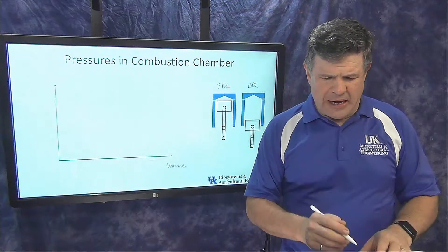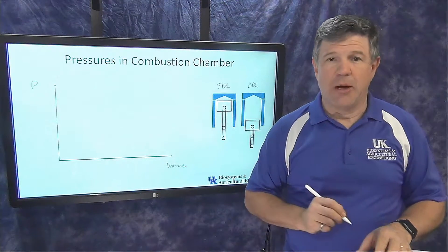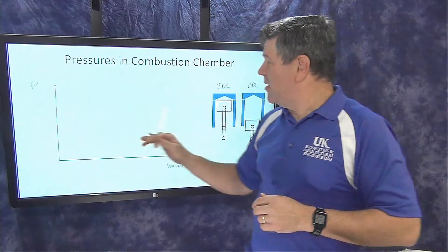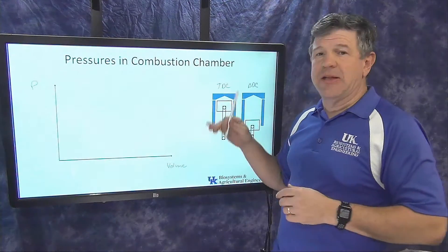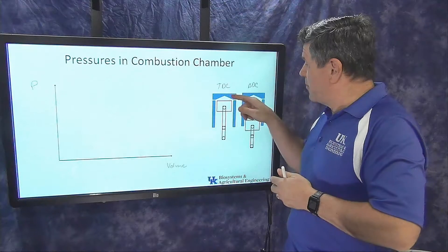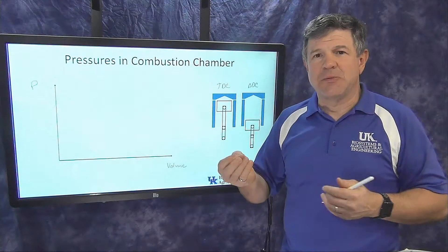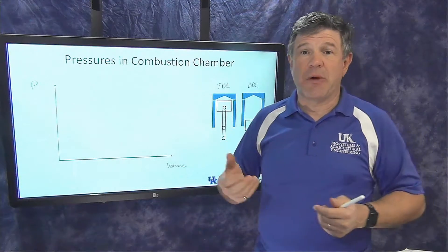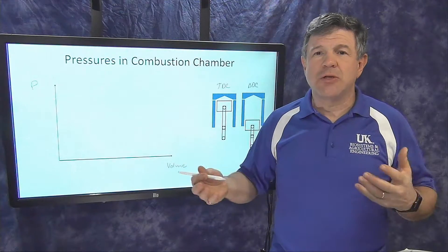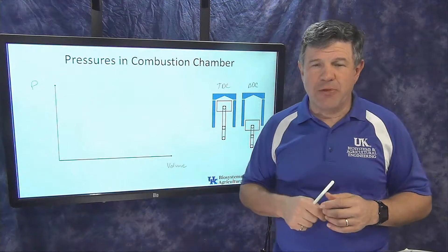On the y-axis, we're going to plot the pressure — capital P. This is the pressure inside the combustion chamber, as if somebody put a pressure sensor in there and measured how much pressure is present. Those are the two things we're going to plot and look at.